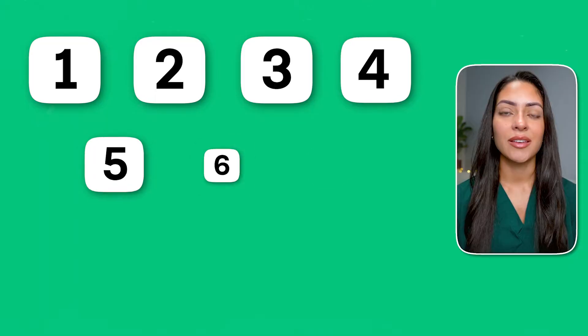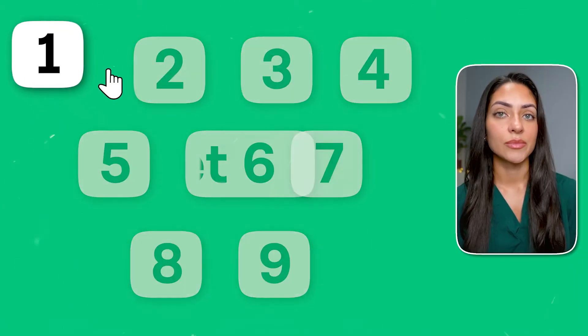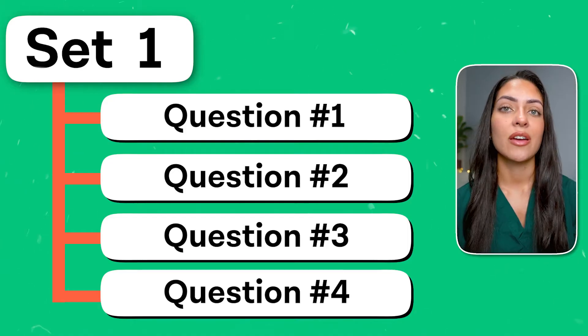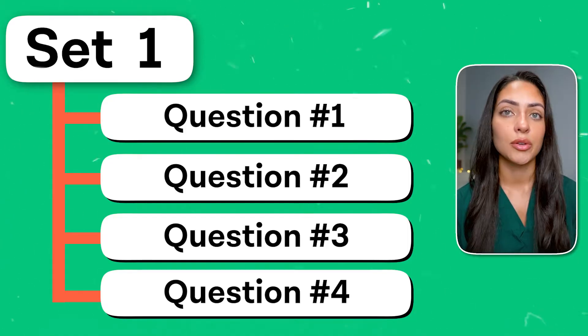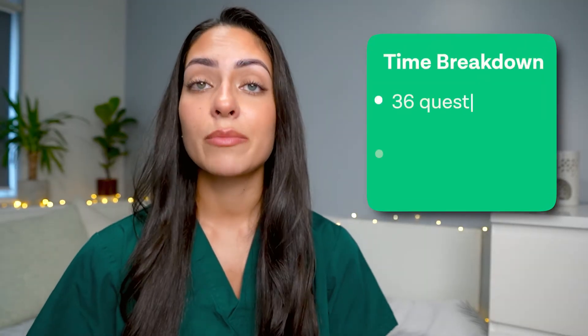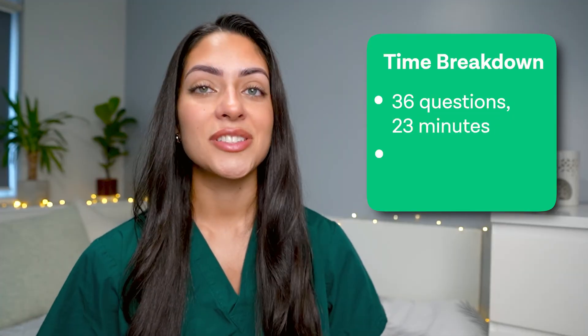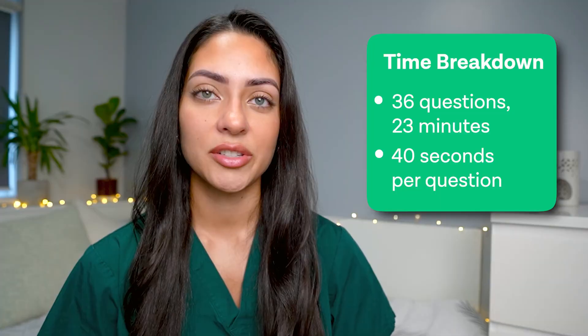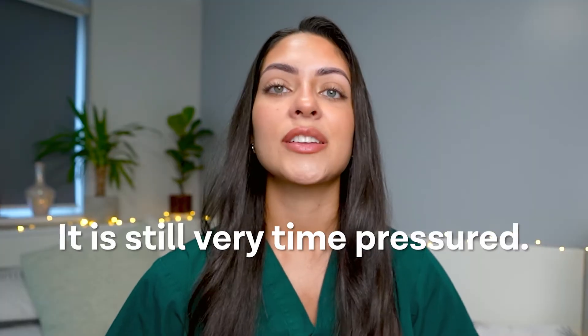In quantitative reasoning there are nine question stems and each stem has four questions, which means there are 36 questions in total. You will have 23 minutes to answer all the questions in this section, which means you have about 40 seconds per question. Although it may feel like you have a bit more time than in the other sections, it is still very time pressured, especially considering how hard it is to do maths questions under pressure.